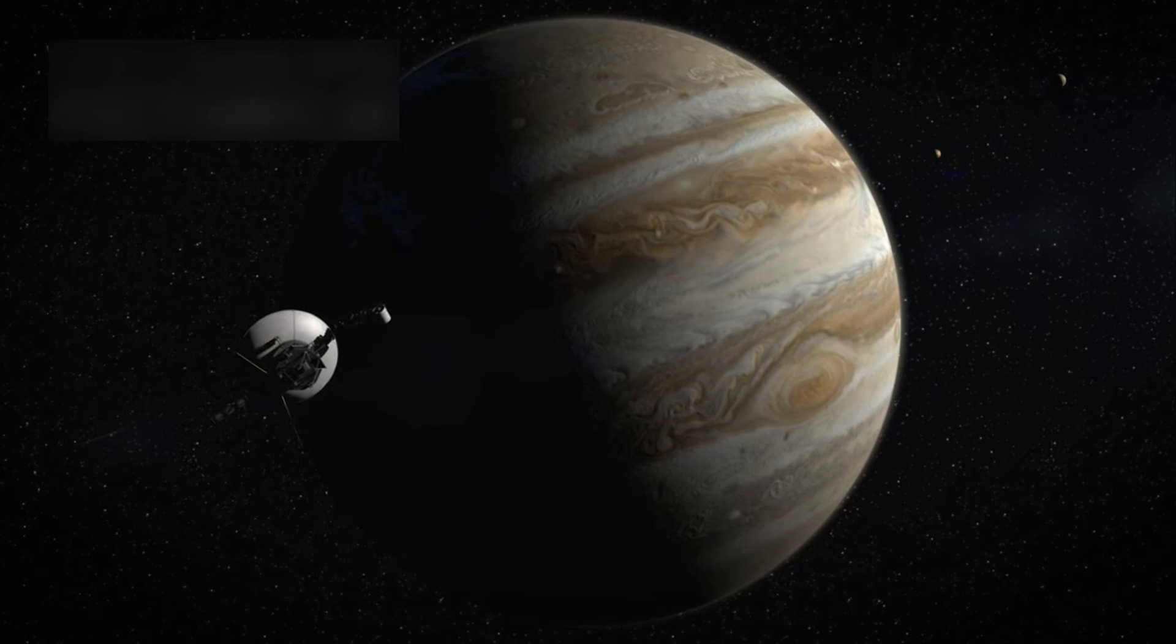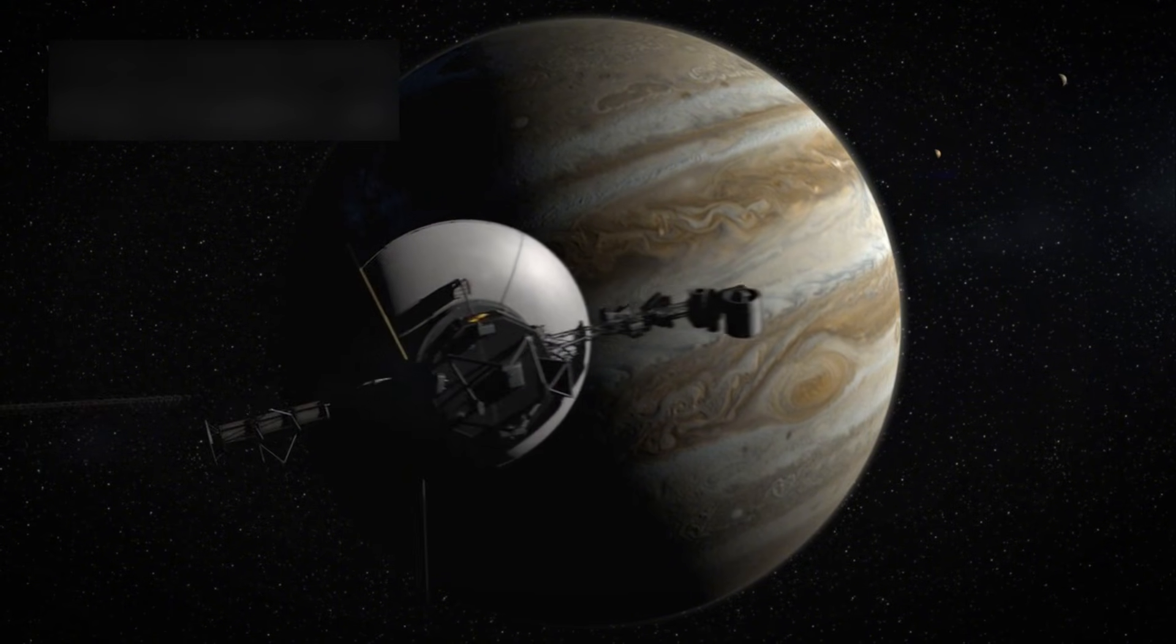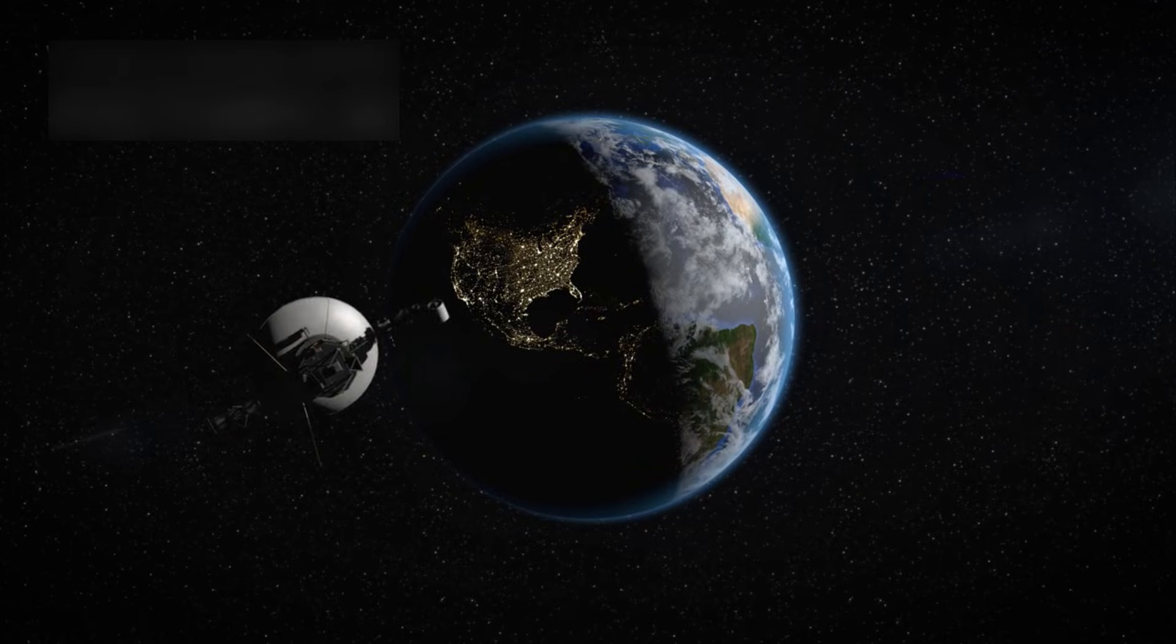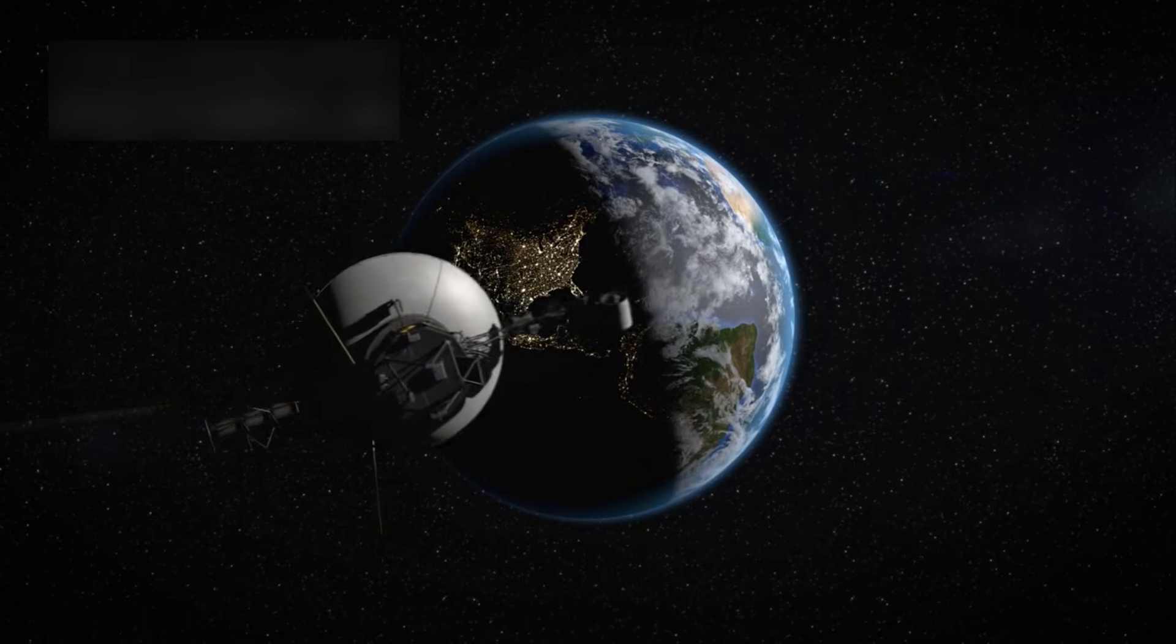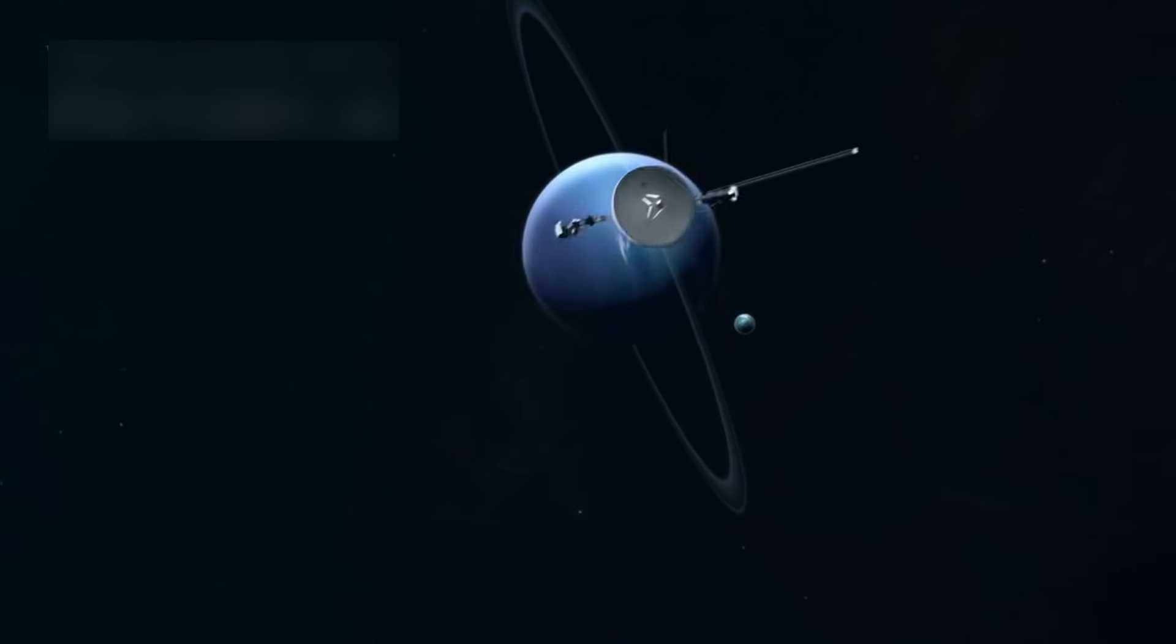The mission was meant to last just five years, but what happened next amazed even the most optimistic scientists. Voyager 1, built with 1970s technology, went far beyond its original purpose. It became a pioneer, sending back stunning and detailed data of planets, their rings, and moons.